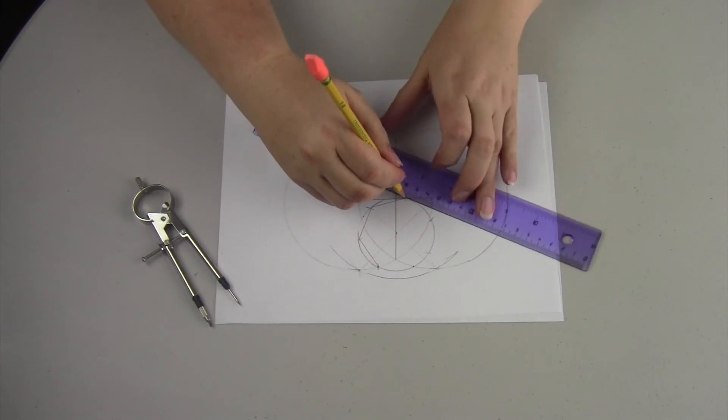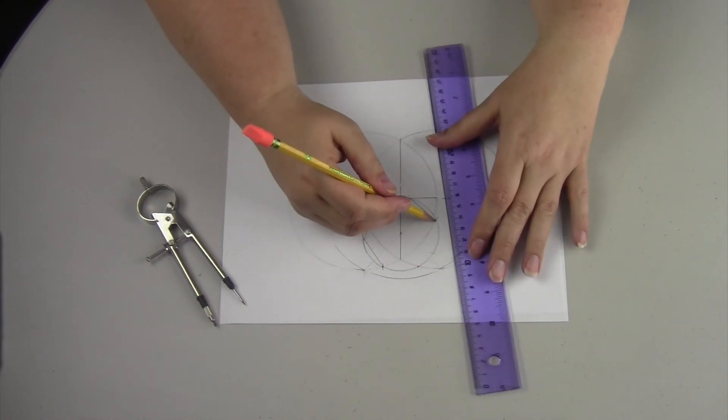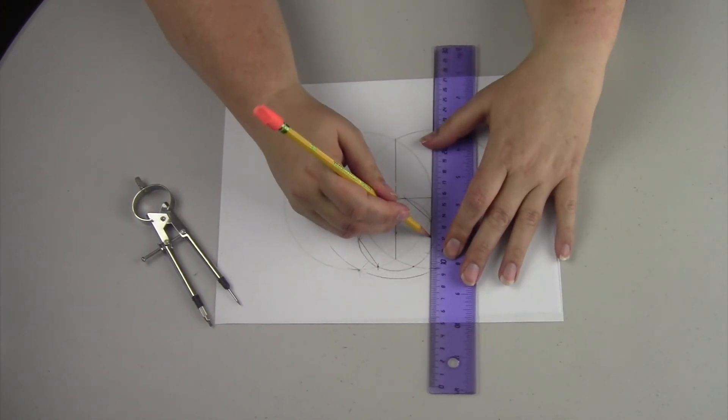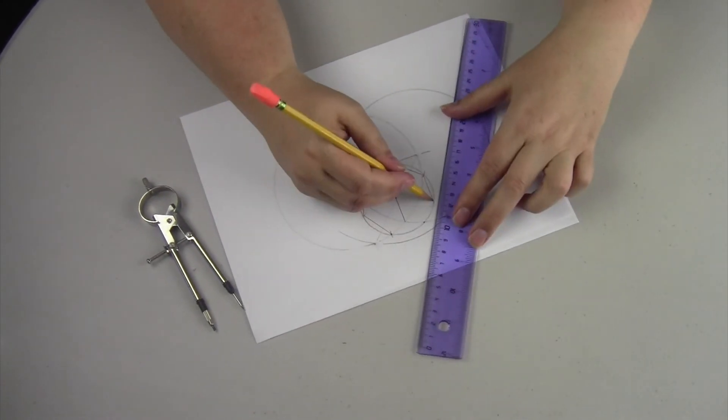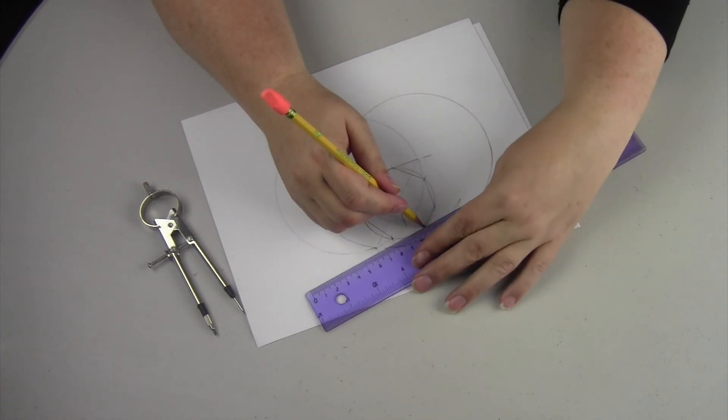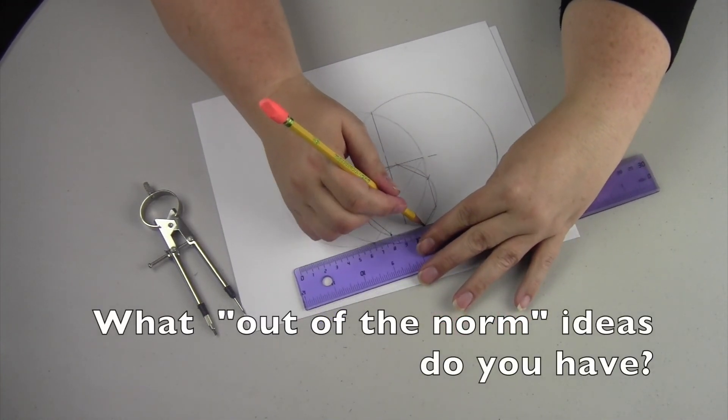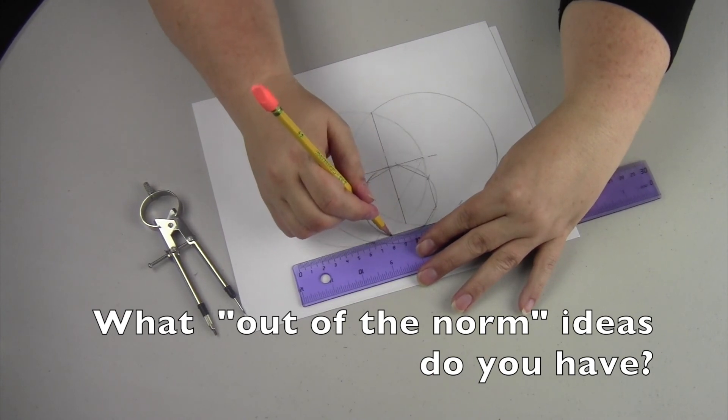Now notice this is outside of the Vesica Pisces. Outside of the Vesica Pisces meaning it didn't happen within the birth canal of the Vesica Pisces where most shapes are formed. In fact all of them are formed except for this one.